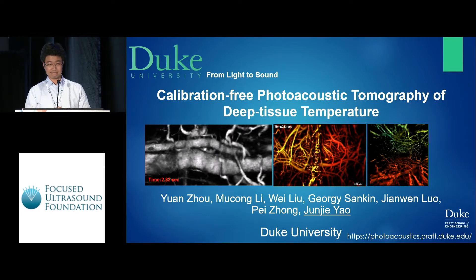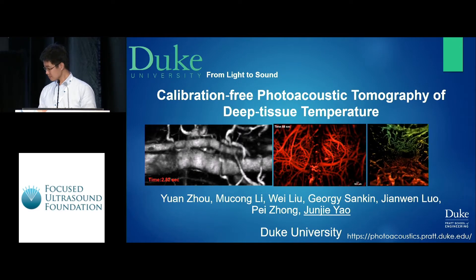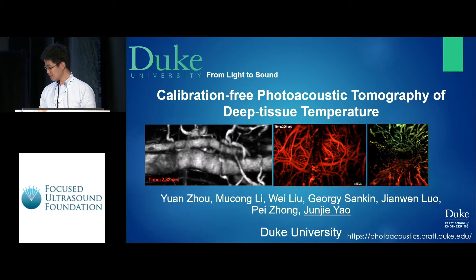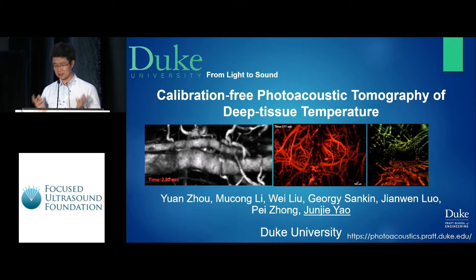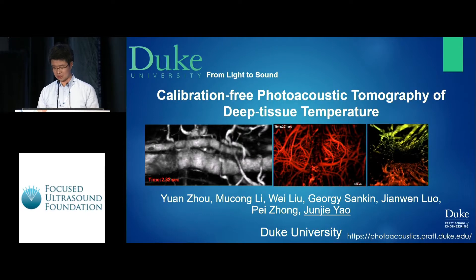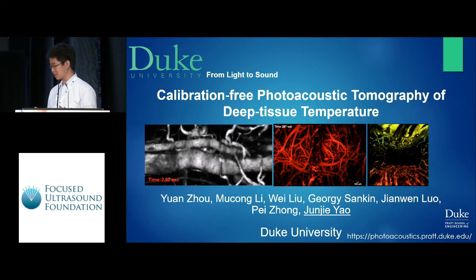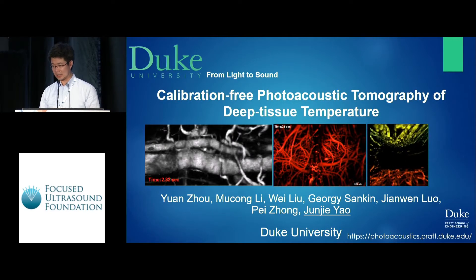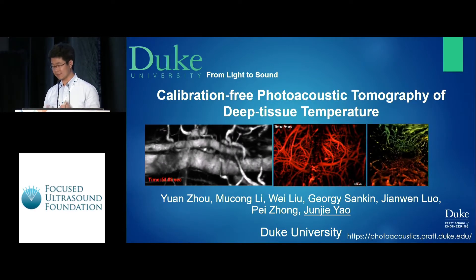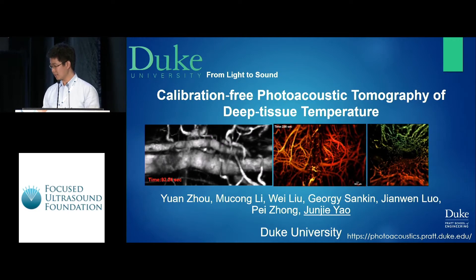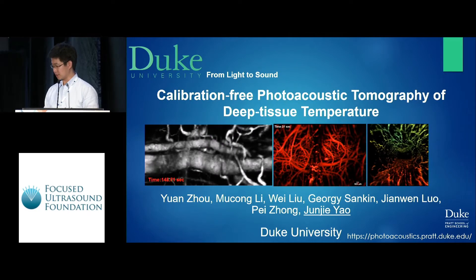Question: In the mouse study, how much did you heat it and what was the laser intensity? Answer: Since it's photo-acoustic imaging, we just have to control the laser power to make sure it doesn't hurt the tissue. That is about 100 milliwatts per centimeter squared, which is within the ANSI limit for laser safety. Question: At which wavelength? Answer: For this one, it's 532 nanometers.